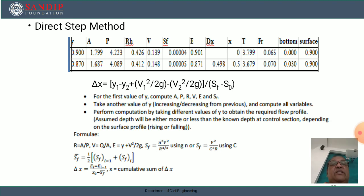For example, in direct step method, the tabular format will be: depth of flow y, area A, perimeter P, hydraulic radius R, velocity V, energy slope Sf, energy E = y + V²/2g, Δx, distance x, top width T, Froude number, and bottom as well as surface.